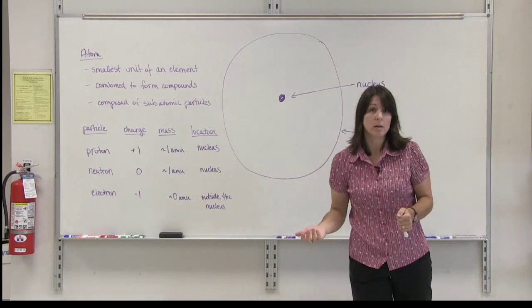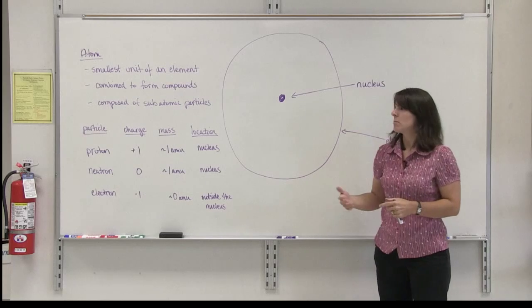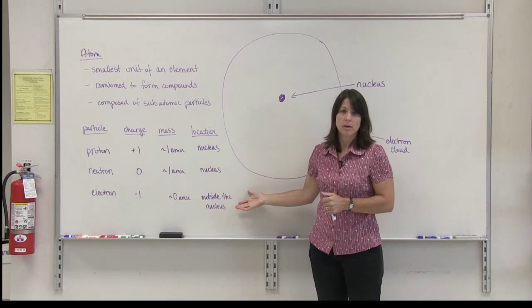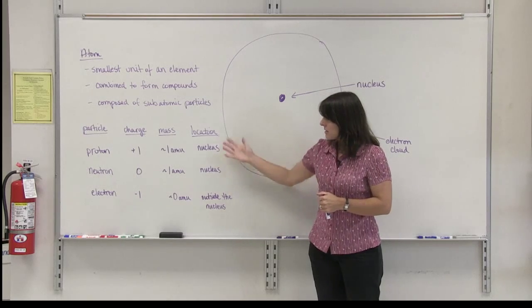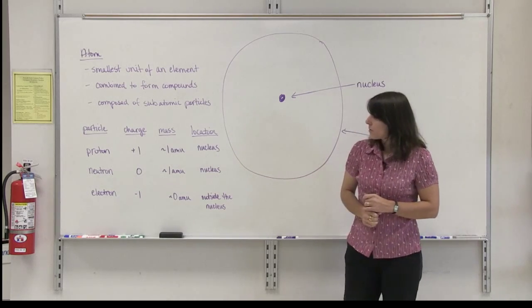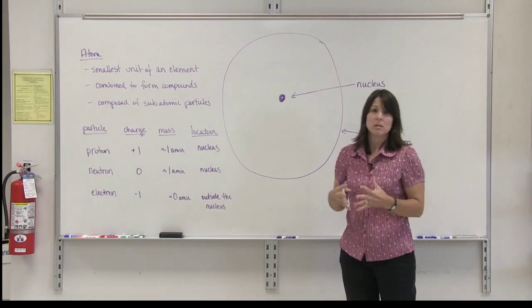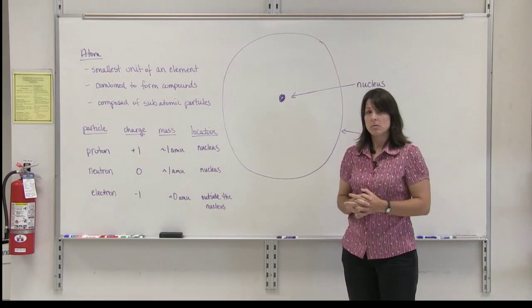The basic structure of an atom is the same for all elements. What is going to differ is the number of subatomic particles in each of those different types of elements. And using this information, we will progress into learning about the different types of atoms and how to differentiate between atoms of different elements.